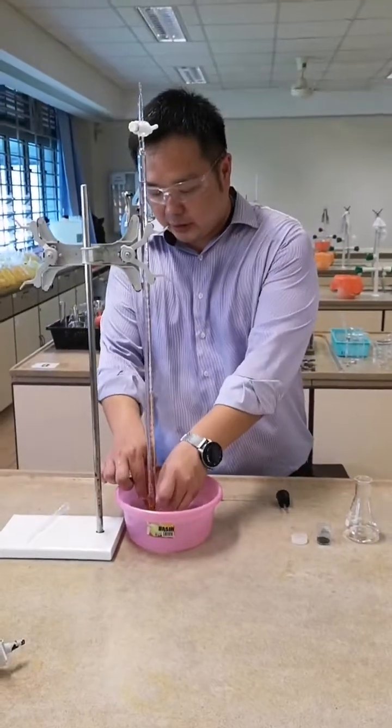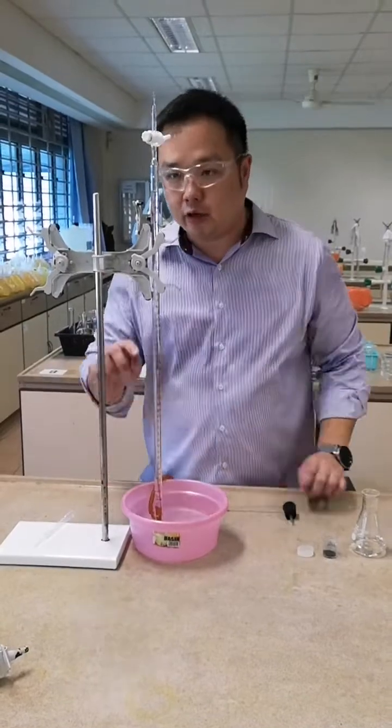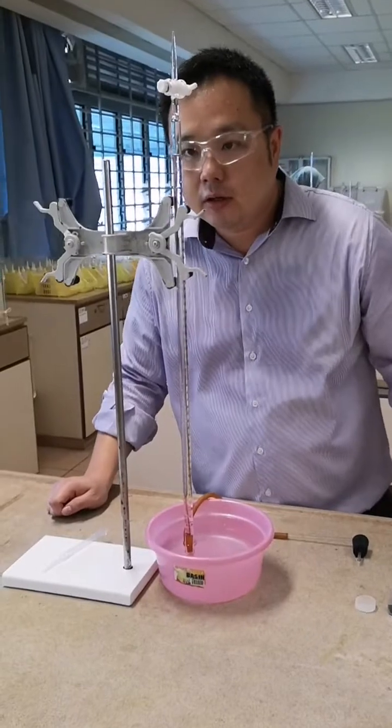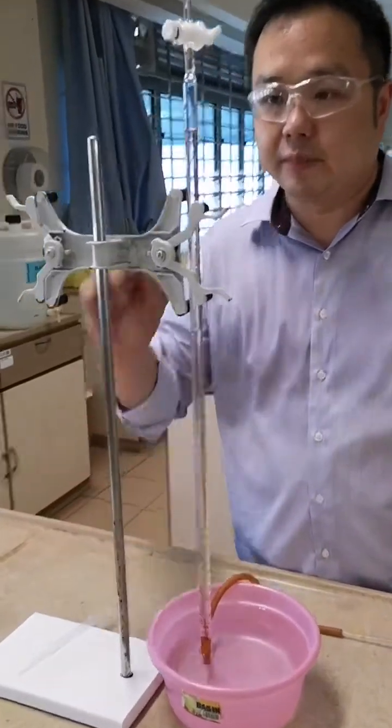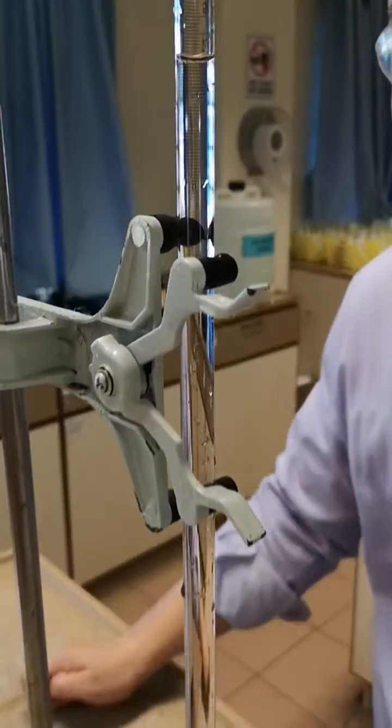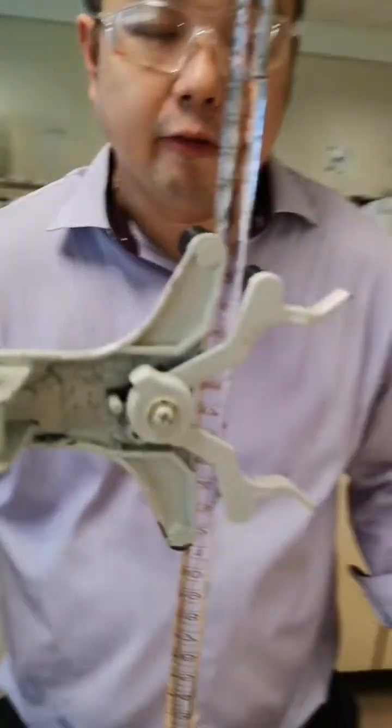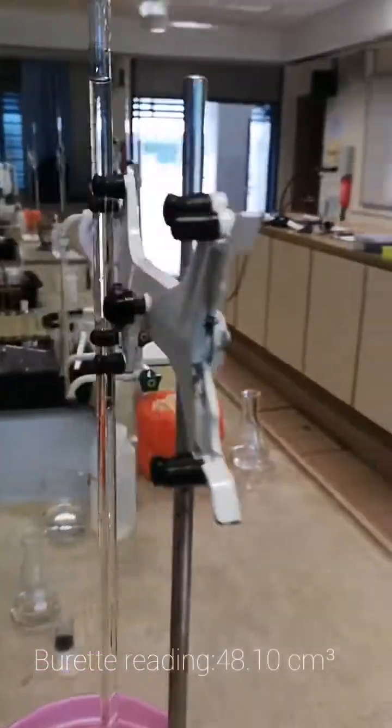After you have inserted the rubber tubing, take note of the initial reading of the burette. Take note the burette is read inverted, so similarly you read at the bottom of the meniscus. Over here you should read 48.1.